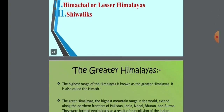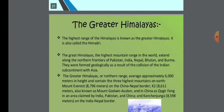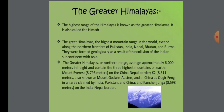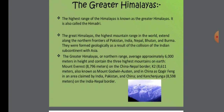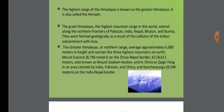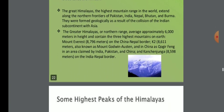Now we will learn about the Greater Himalayas. The highest range of the Himalayas is known as the Greater Himalayas, also called Himadri. The Great Himalayas extend along the northern frontier of Pakistan, India, Nepal, Bhutan, and Burma. They were formed as a result of the collision of the Indian subcontinent with Asia.